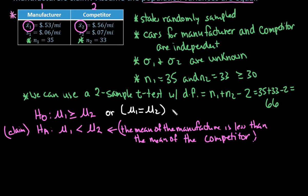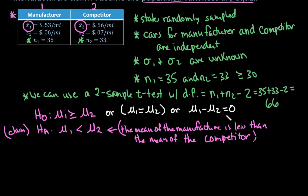The null hypothesis would be the complement: mu 1 is greater than or equal to mu 2. Some texts write the null with just an equal sign, which is also accepted. Another way to express it is mu 1 minus mu 2 equals 0, which is why you plug in 0 for mu 1 minus mu 2 in the formula — we're saying there is no difference. We always start by assuming the null hypothesis is true and look at the evidence to see if it's strong enough.